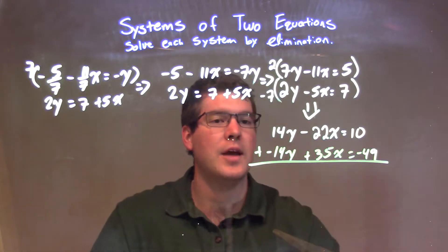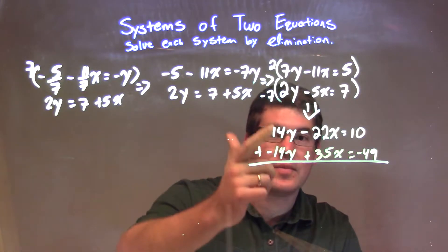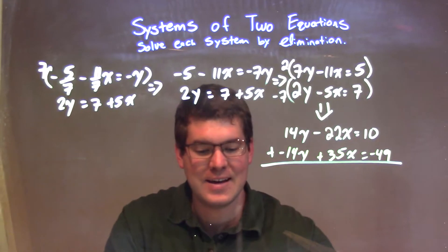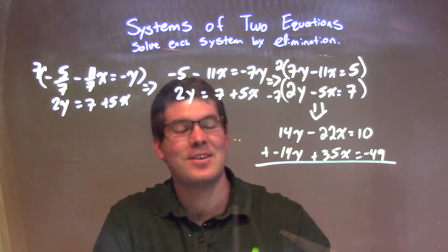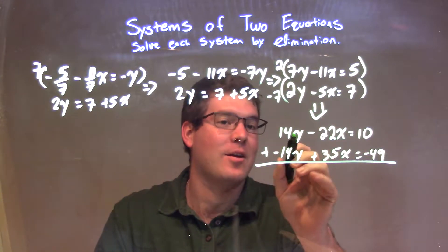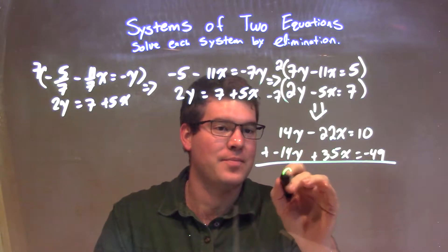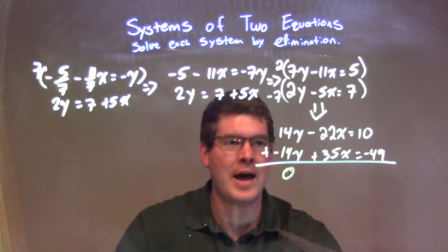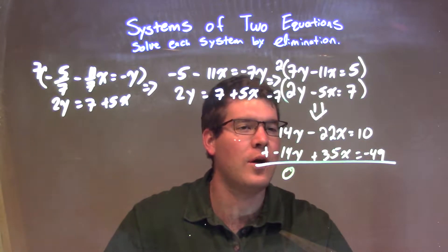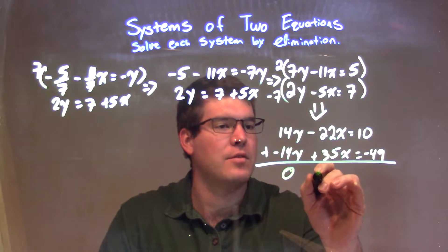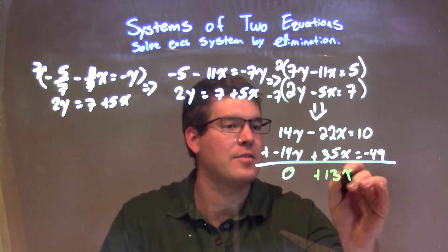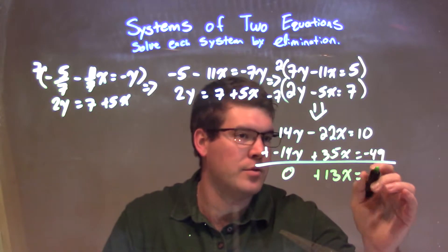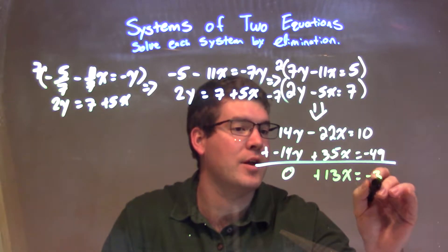When I add these two together, the y's will eliminate. I'm sorry the camera's shaking at this moment, my lovely cat is running its head against the tripod. Anyway, negative 14y minus 14y is 0. And then we have negative 22x plus 35x to come out to be 13. So a positive 13x equals, and then we have 10 minus 49, plus negative 49 is negative 39.